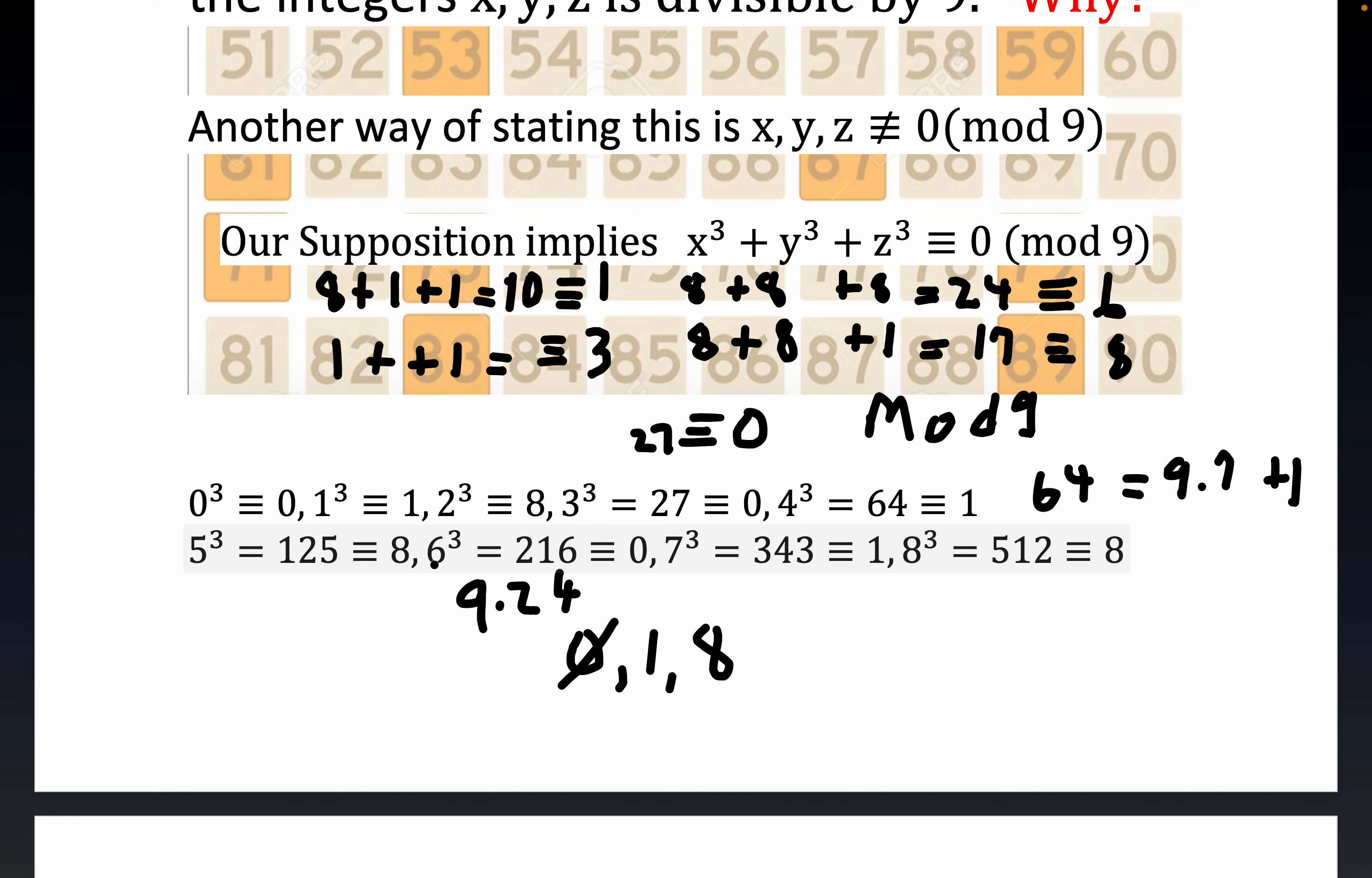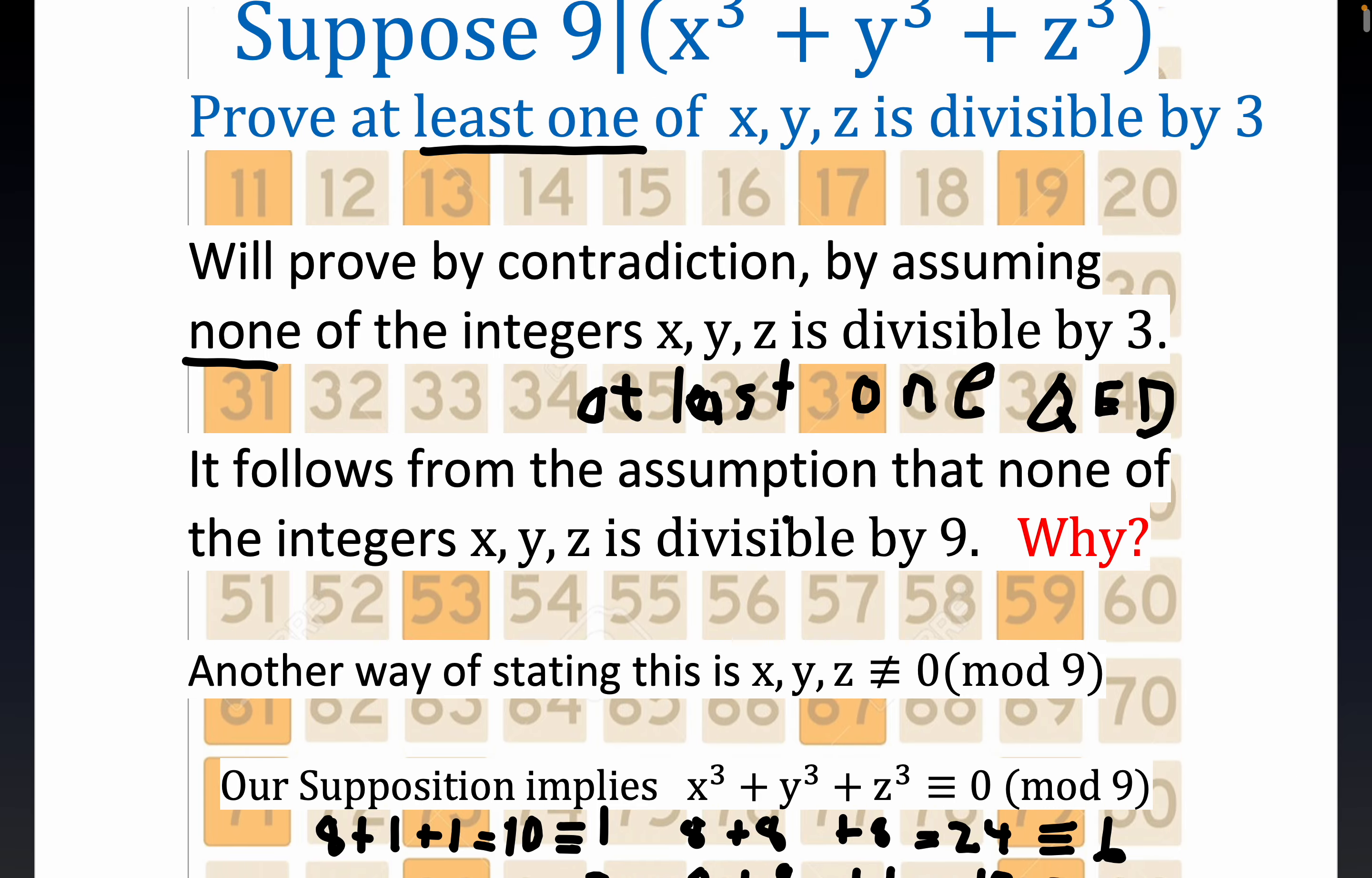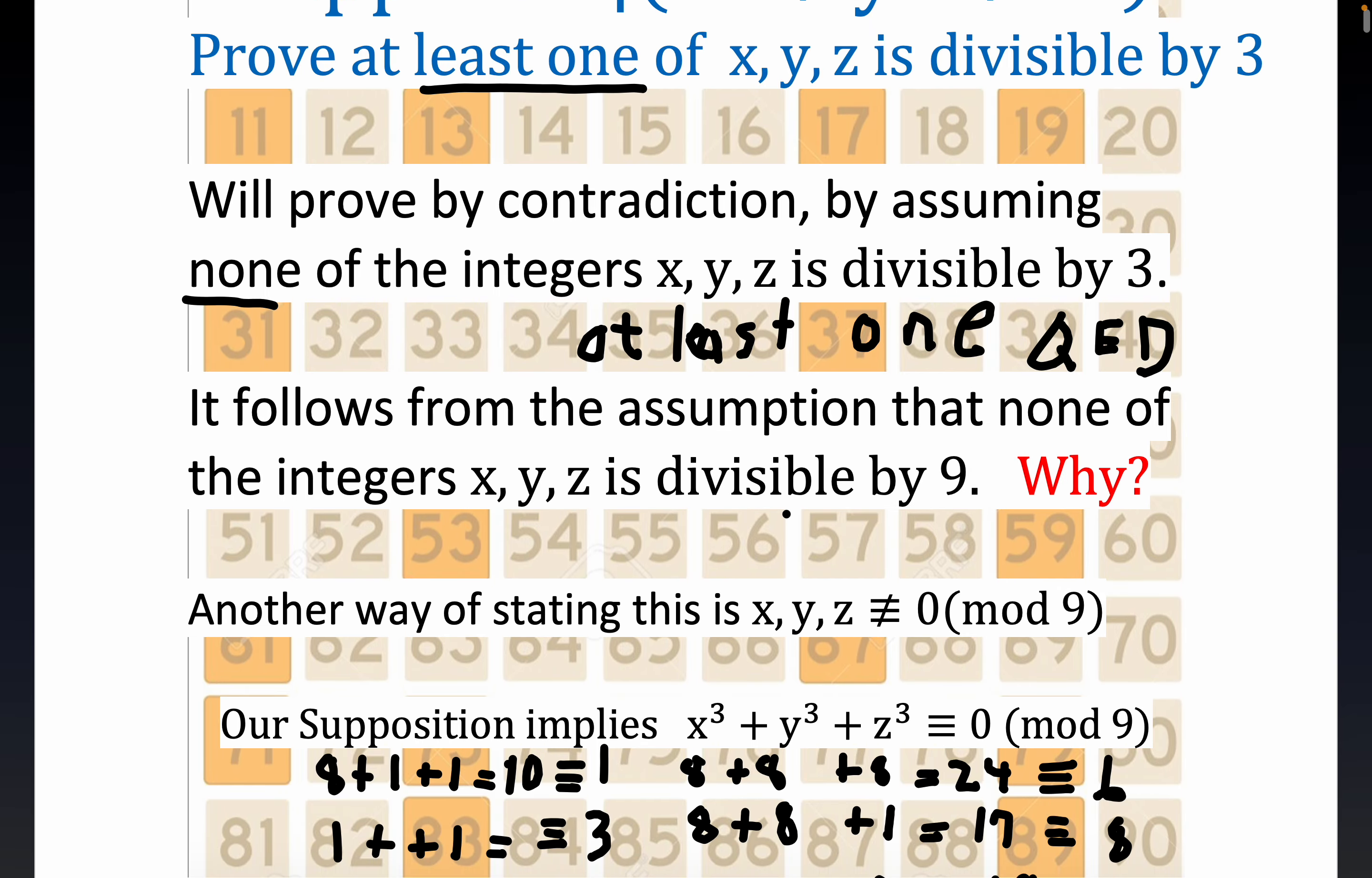And again, the rest of this is just some arithmetic that you can go through and verify if you think I made a mistake. Similarly for 125. But again, it was nice that we just got 0, 1, and 8, and we could rule out 0 since we assumed that none of the integers is divisible by 3.